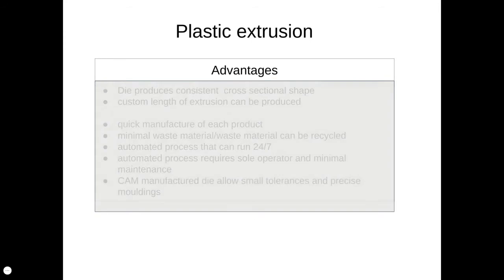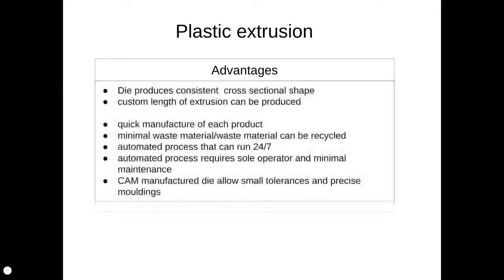So, very similar starting point — plastic extrusion is very similar to injection moulding. The key difference is that it feeds through a die to create a long, continuous piece of material with a consistent cross section, cooled through water and cut into pieces. The advantages are similar to injection moulding: quick manufacture, waste can be fed back into the hopper, and it's an automated process.